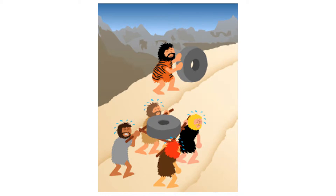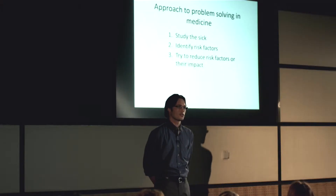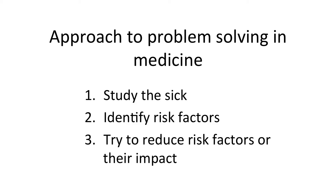Here you can see the first positive deviant happily rolling a wheel up the hill as opposed to carrying it. This is a little bit different than the traditional approach to problem solving in medicine. Traditionally, we study the sick, we study the disease process, then we try and identify the risk factors — especially those that are modifiable — that give a bad prognosis or bad outcome, and we try to reduce those risk factors or their impact.